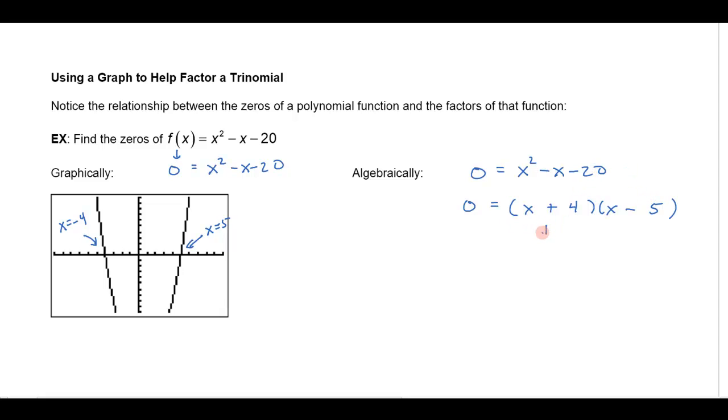Then I set each of these factors equal to zero and I will get x = -4 here. And if I set this one equal to zero, I will get x = 5 here. And notice that those are the values that we got over here by doing it graphically. So if I wanted to use the graph to help me factor,